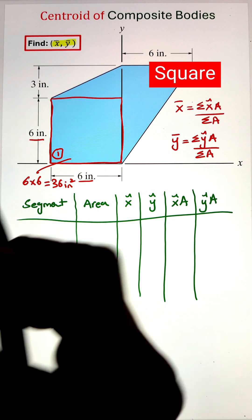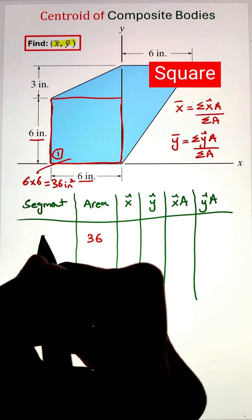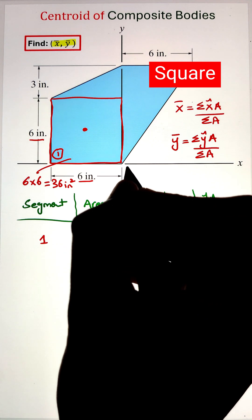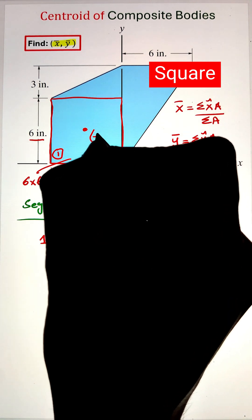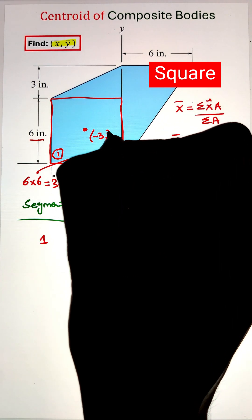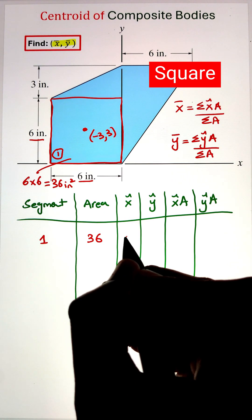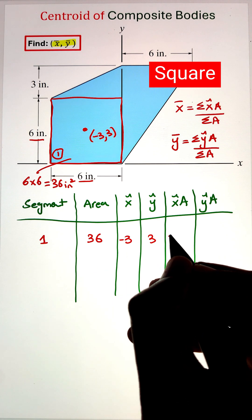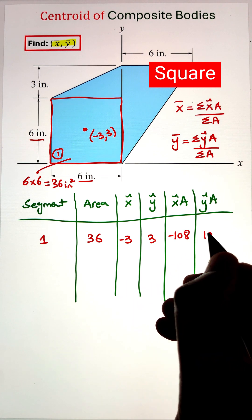Once we have filled those values in the table, we can go ahead and multiply our x' and y' with the area to get the product of the centroid with the area for the individual square. That is coming out to -108 and 108.